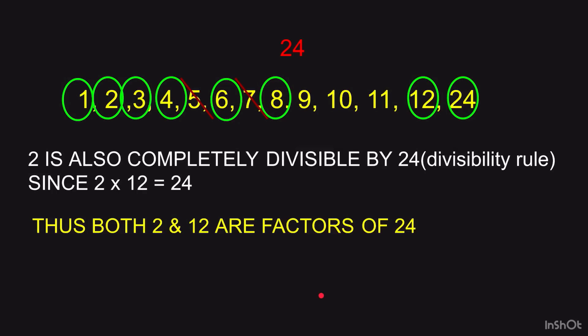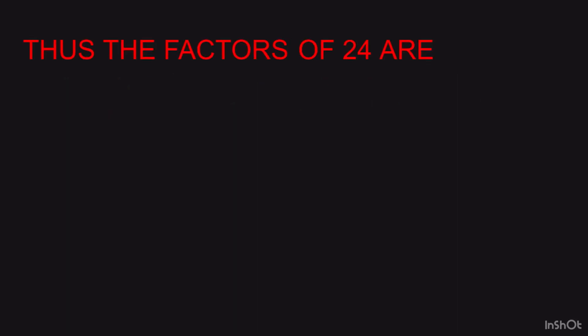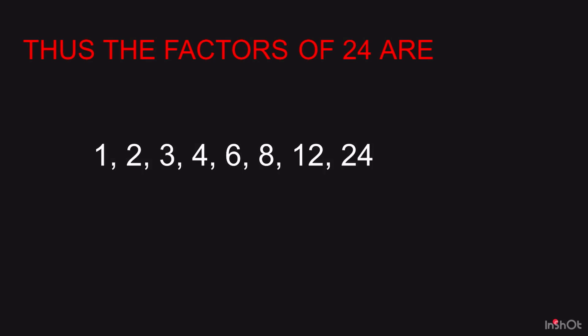Checking 9: sum of digits of 24 is 2 plus 4 equals 6; 6 is not divisible by 9, so 24 is not divisible by 9. For 10: last digit is 4, not 0, so 10 is not a factor. For 11: from the table, 11 twos are 22 and 11 threes are 33; 24 falls between them, so 24 does not appear in the table of 11 — 11 is not a factor. So the complete list of factors of 24 is: 1, 2, 3, 4, 6, 8, 12, and 24.